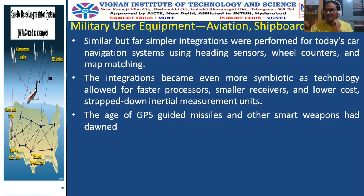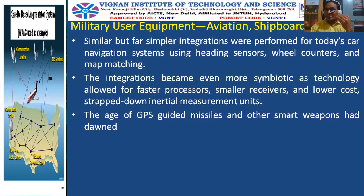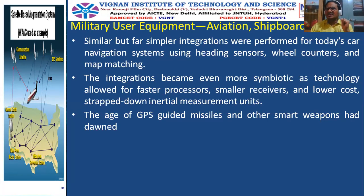Integrations became even more symbiotic as technology allowed faster processors, smaller receivers, lower cost, and strapped-down inertial measurement units. The integration techniques — loosely coupled or tightly coupled — became feasible because of faster processors and smaller receivers. Today we use GPS-guided missiles, and other smart weapons are becoming more prevalent.